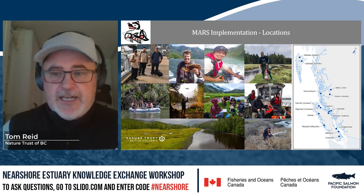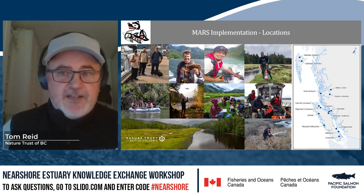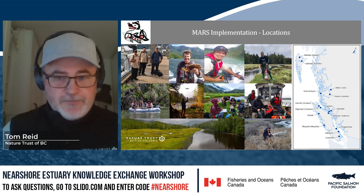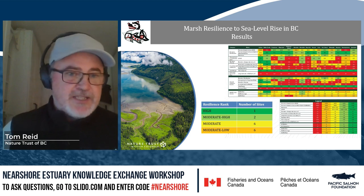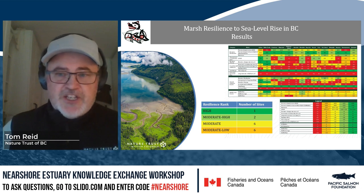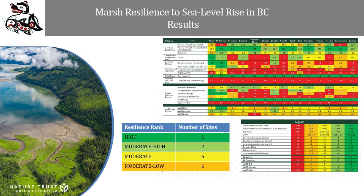These are the locations where we've been able to implement this monitoring tool — from southeast Vancouver Island in the Cowichan and Nanaimo areas, all the way to the Needham in Camdas in Haida Gwaii, and several spots in between. We have 15 sites being monitored. Looking at the stoplight diagram results, we have only one site that ranks high resilience. Two are moderate-high, and the remainder are moderate to moderate-low, which indicates we need to start looking at enhancement, restoration acquisition, and large-scale projects that will build resilient capacity of these systems.